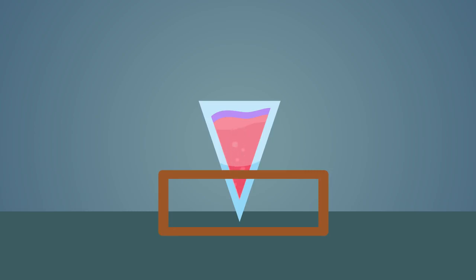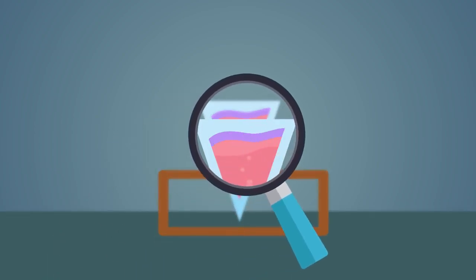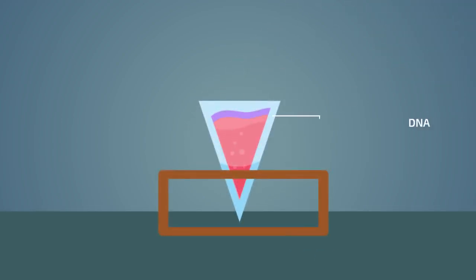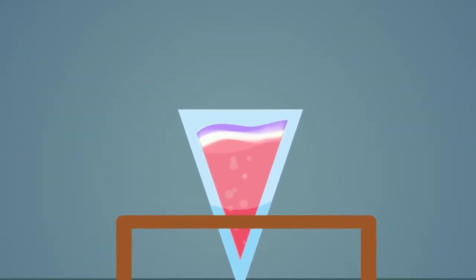Ethanol is less dense than water, so it forms a layer on top of the fruit soup. The salted DNA is insoluble in ethanol, so it will begin to precipitate out of the fruit soup at the boundary between the soup and the ethanol. It transforms from a dissolved solute into an insoluble substance in the ethanol layer.